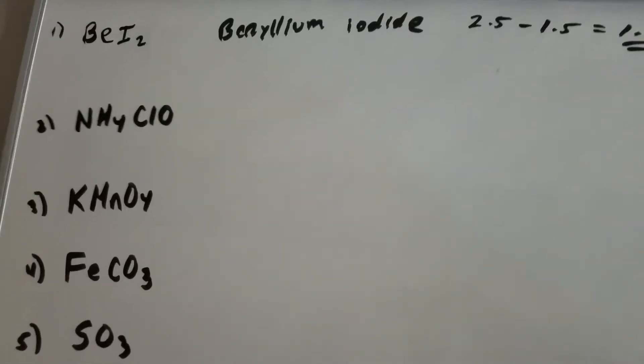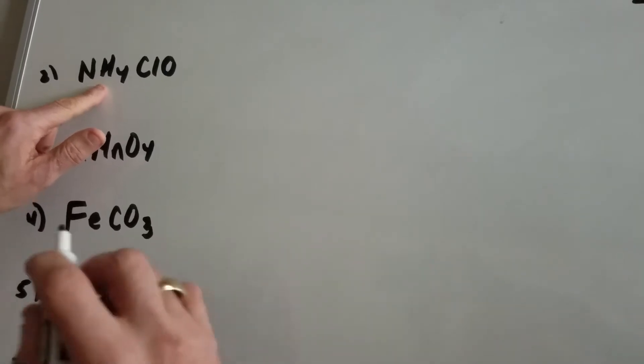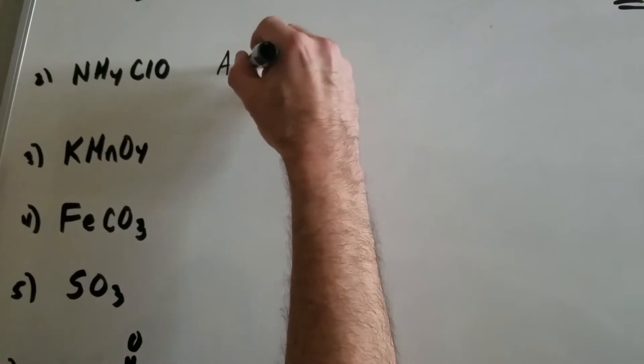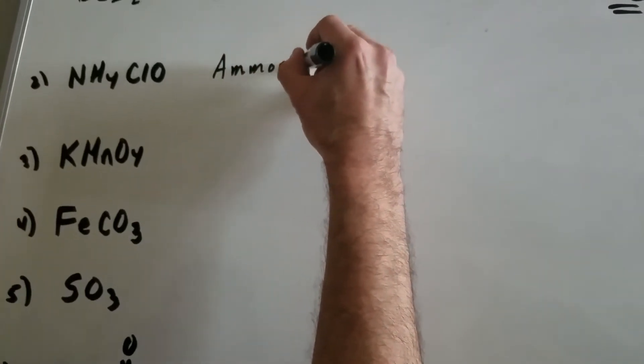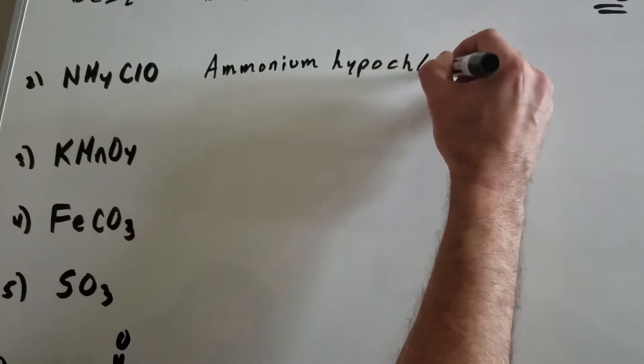How about this next one? This is a hard one. NH4ClO. Well, this is ammonium, and this is hypochlorite. So this would be called ammonium hypochlorite.